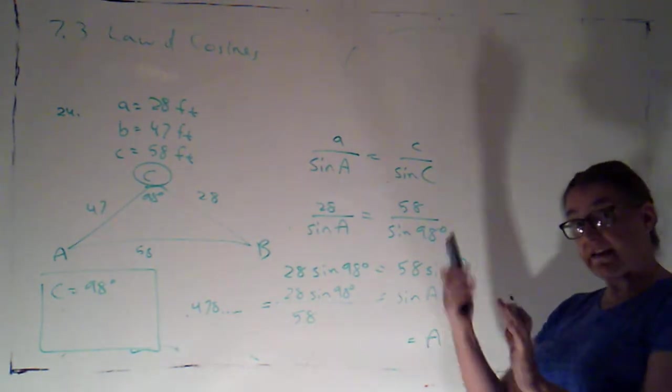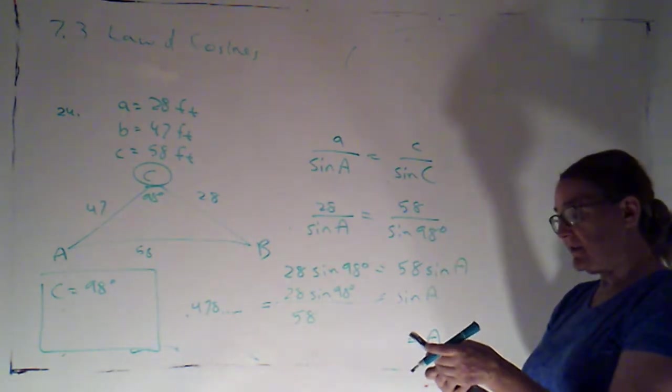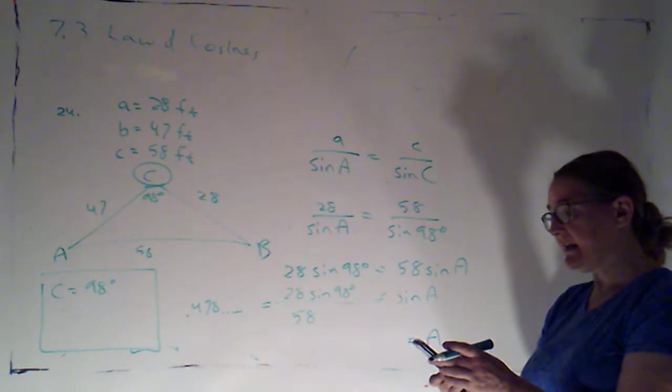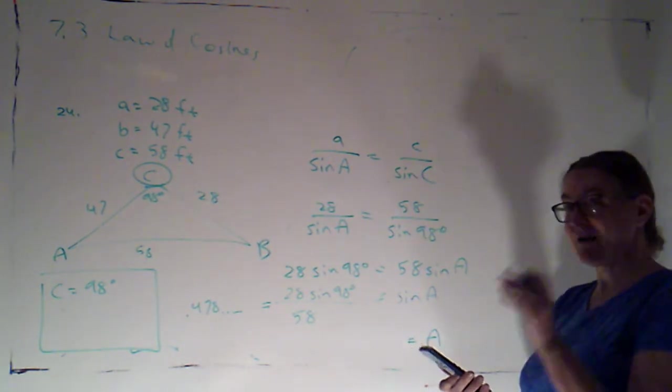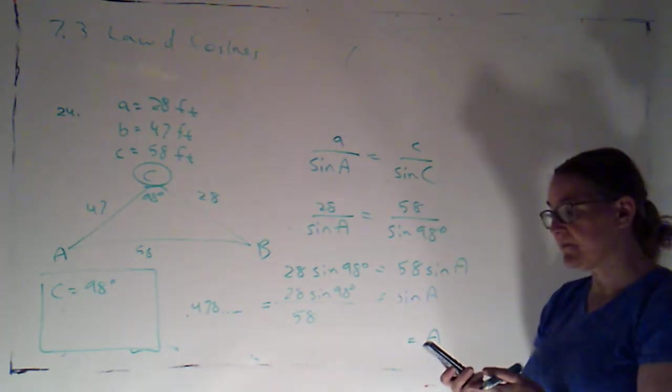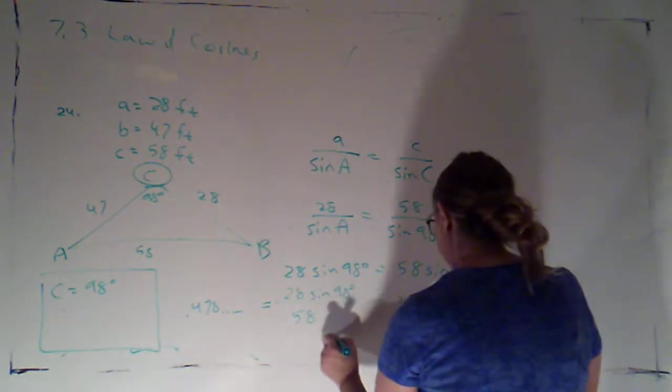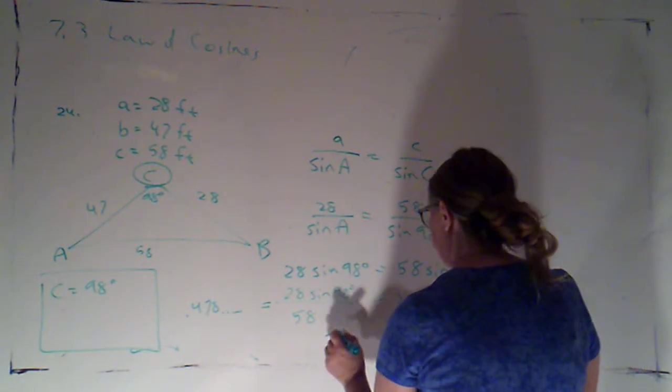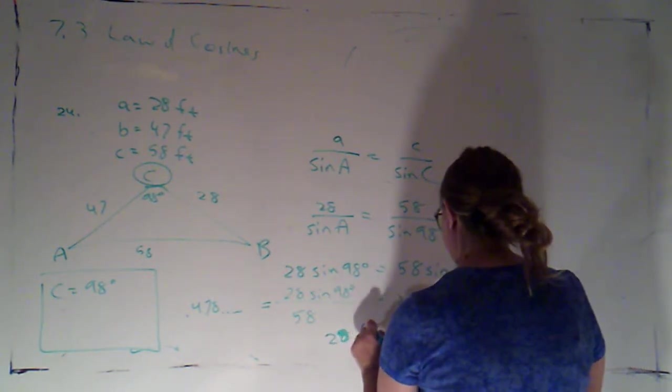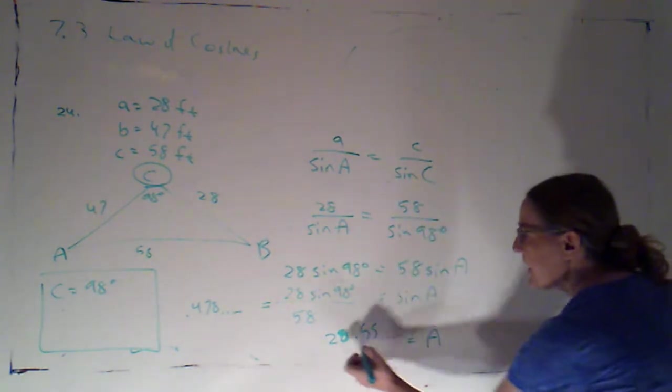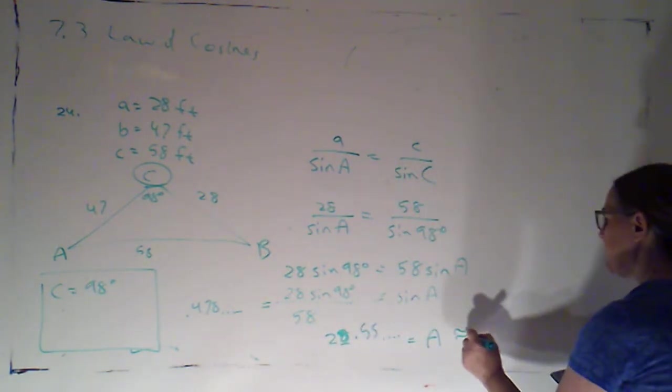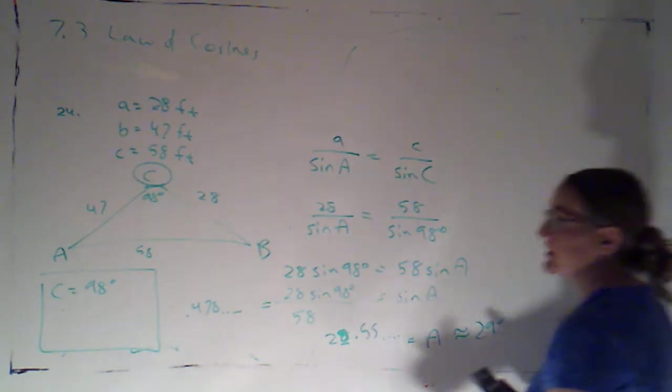So A is going to be inverse sine of this. So while I've still got that in my calculator, I'm hitting the shift key and then the sine key, and then the answer key to plug in that previous answer. And what I get is 28.55 blah blah blah. Again, I'm rounding to the nearest degree, so I would round that to 29 degrees.